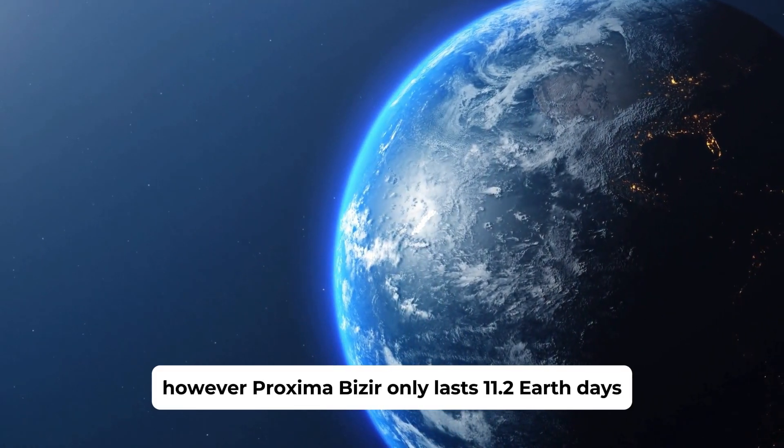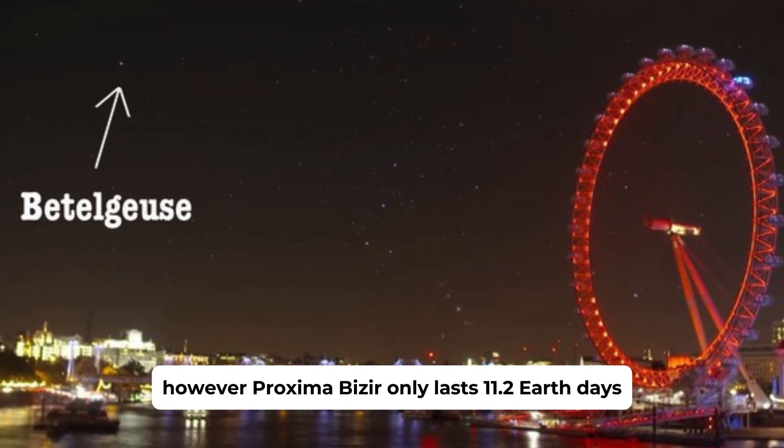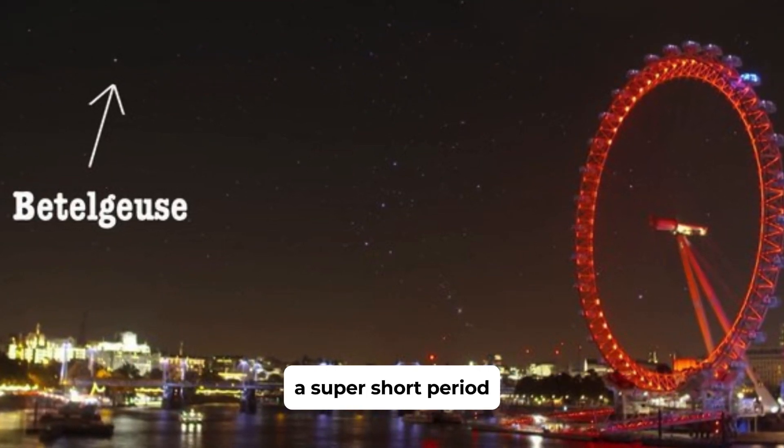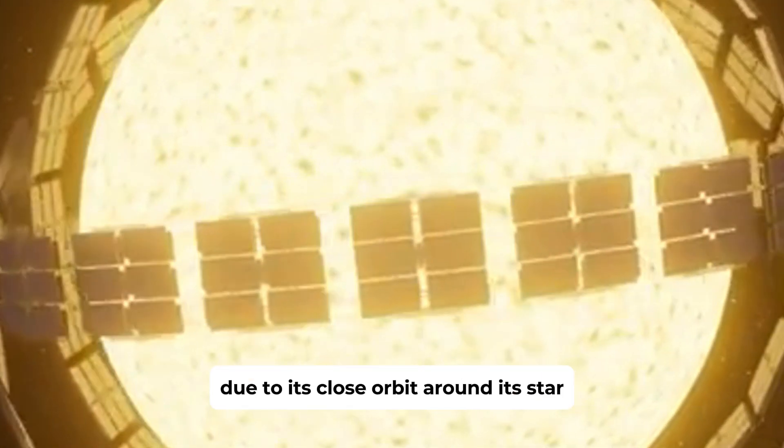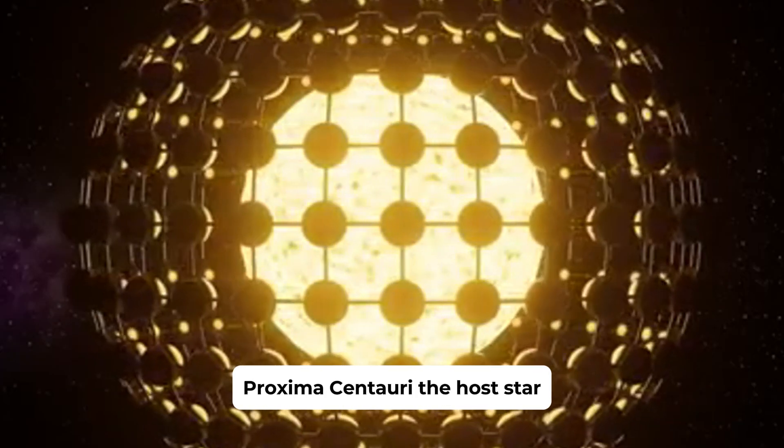However, Proxima b's year only lasts 11.2 Earth days, a super short period due to its close orbit around its star, Proxima Centauri.